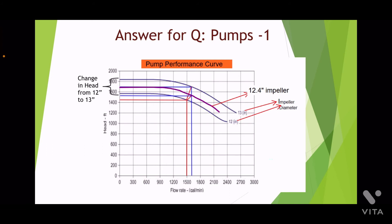Either we can calculate the new impeller diameter required based on the new rated flow and then find the head developed, or for the new flow rate we can first calculate the new head required based on the discharge system and then based on this new calculated head find the impeller diameter and then find the operating point. If you do it the latter way, then we end up with a 12.4-inch impeller size rather than a 13-inch impeller size.